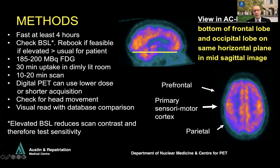We use 185 to 200 megabecquerels of FDG. Patients are injected in a dimly lit room and told to rest quietly for 30 minutes. We then do a 15-minute scan, though sometimes 10 minutes. If you have a digital PET-CT you can use lower dose or shorter acquisition time. It's very important to check for head movement and make sure your low-dose CT is well aligned with your PET, as significant head movement can give false positive results — rotating the head will make one side of the brain look brighter than the other.